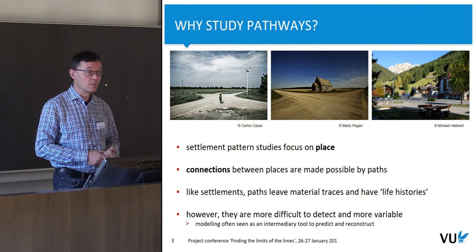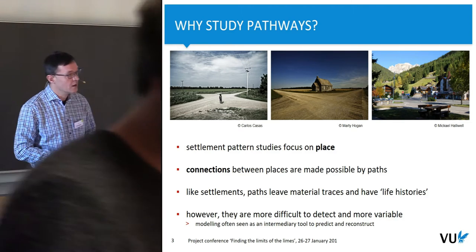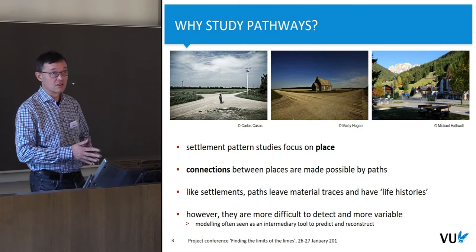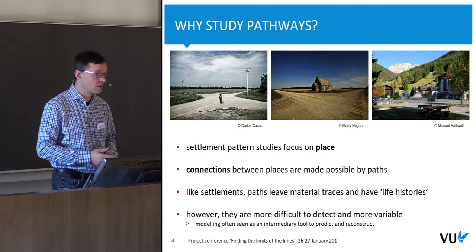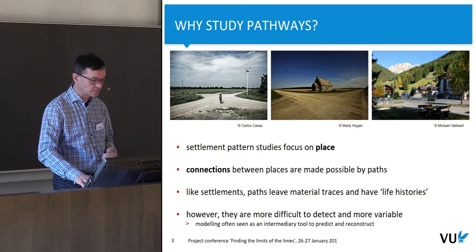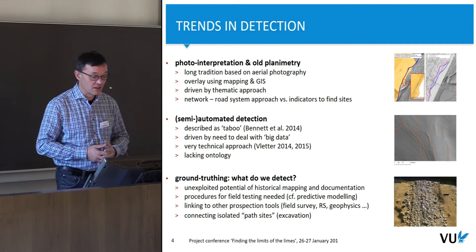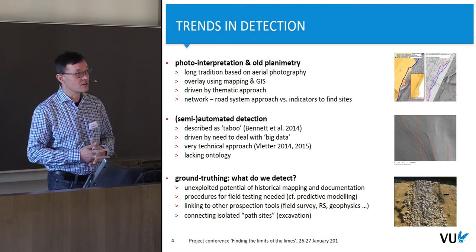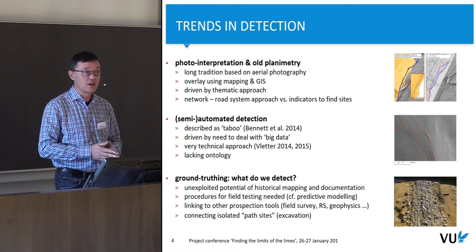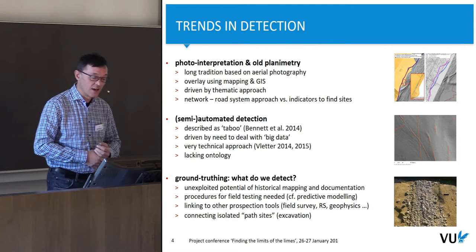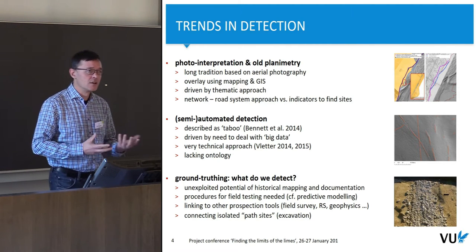Pathways have a specific problem in that they are more difficult to detect and they also appear more variable than settlements. This is a major reason why modeling has been used quite often to try to predict and reconstruct pathways, so we are not as reliant on actual datasets as we are with settlement studies. Even while detection is quite challenging, there are currently a few trends in detection that are changing the game — there is a long tradition of using aerial photography and historical mapping to find traces of old roads and routes, though these usually work only to a certain extent.